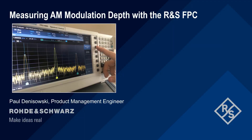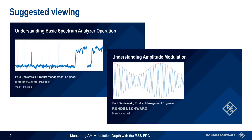Hello, and welcome to this presentation: Measuring AM Modulation Depth with the Rohde & Schwarz FPC. In this short presentation, we'll show you how to measure the modulation depth of an AM signal using a Rohde & Schwarz FPC series spectrum analyzer. This presentation assumes an understanding of both basic spectrum analyzer operation as well as amplitude modulation. If you're unfamiliar with these topics or would like a brief refresher, you might want to watch the presentations on Understanding Basic Spectrum Analyzer Operation and/or Understanding Amplitude Modulation before beginning this presentation.